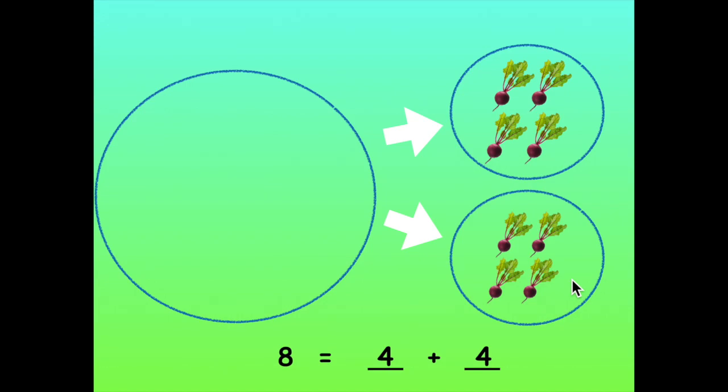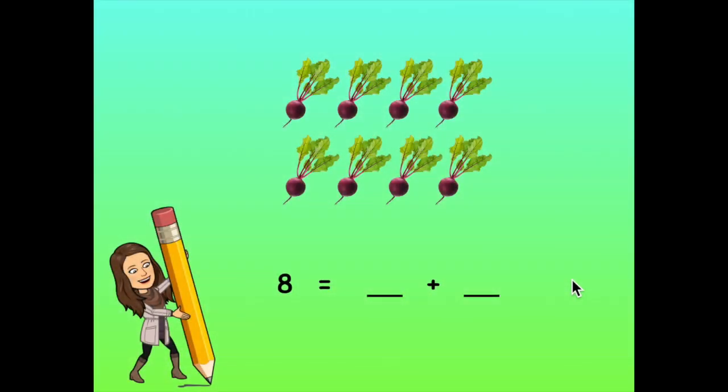You're right. There's lots of ways you can break apart 8 beets. Let's try breaking apart 8 beets again, but this time instead of moving the beets we're going to use our pencil to draw circles around the groups. You could draw a circle around 2 beets to show that you picked 2 in the morning. Then you would need to draw a circle around the rest of the beets to show that you picked the rest in the afternoon. How many did you pick in the afternoon? You're right. You picked 6 beets in the afternoon. How would you write that equation? You're right again. 8 equals 2 plus 6. Great job. That's how you can break the numbers 8 and 9 into 2 groups.